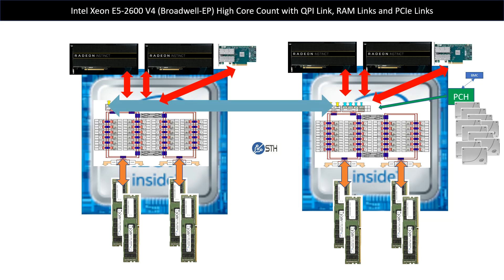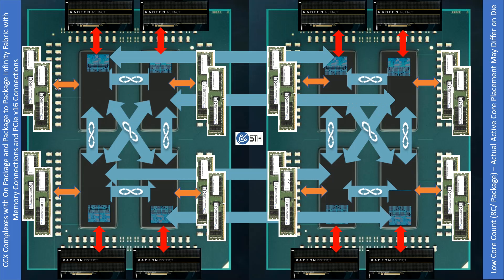While that focused on high core count, what happens when we look at low core count instead? Taking eight cores per package means each die will have two cores active. AMD is able to keep full functionality, but any application spanning multiple cores is going to hit the Infinity Fabric quite often. We expect the Infinity Fabric will be less loaded due to having fewer cores, but it's still a consideration.